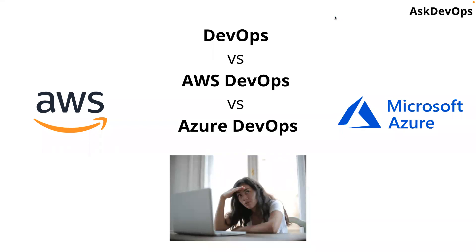Welcome to this video in which I am going to explain the difference between DevOps, AWS DevOps, and Azure DevOps. A lot of students have always asked me this question — what is the difference between all of these different DevOpses? There is an AWS DevOps certification and also an Azure DevOps certification. Which one should I take? Am I taking an AWS DevOps training or Azure DevOps training, or is it a different DevOps altogether? Is there something called a DevOps certification? Today in this video, in the next five to six minutes, you will have the answer. I request you to watch completely and then you will get a complete idea about this.